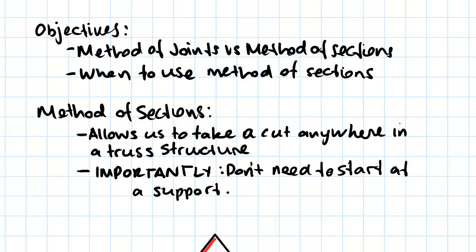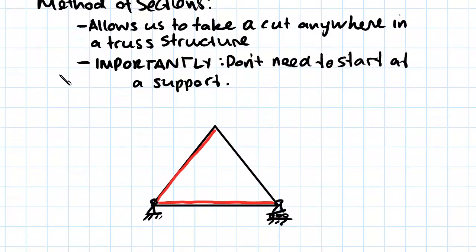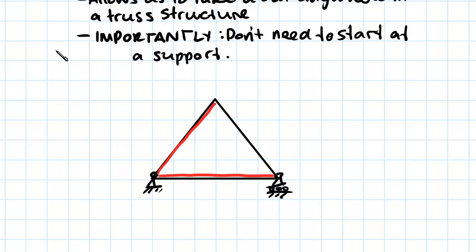So we'll just go through a couple of examples where we look at whether we should use a method of joints or a method of sections. So the first one we have here, this is just a super simple truss. We're trying to find the members in red.